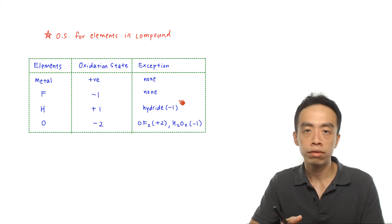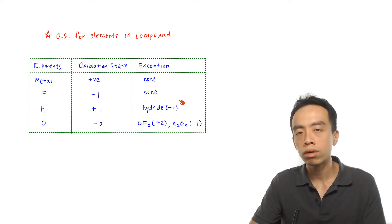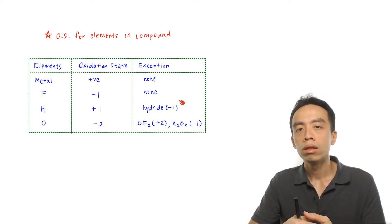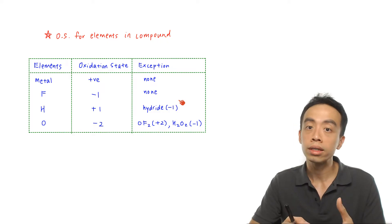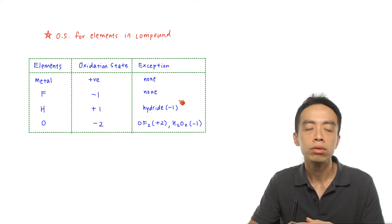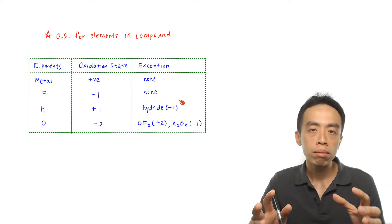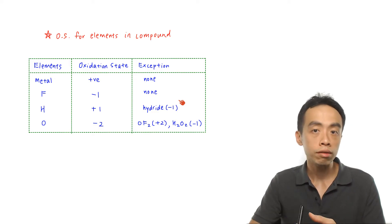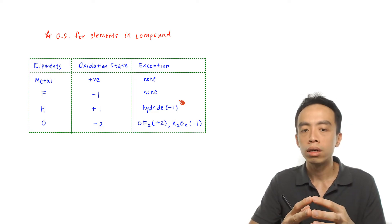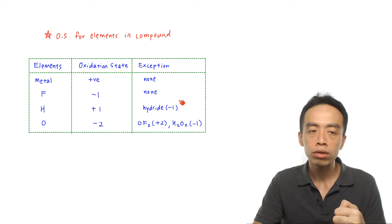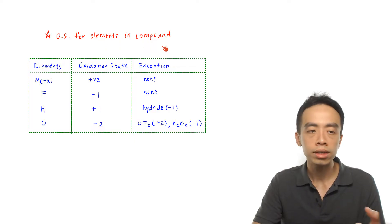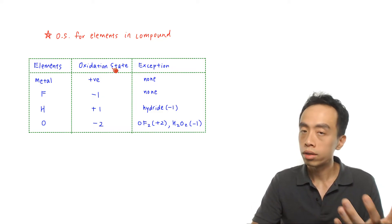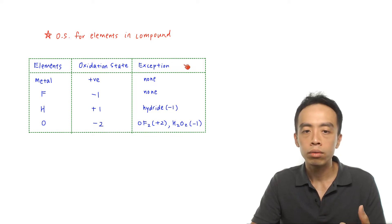Because electronegativity is a fixed property of elements, we can draw conclusions about the tendency for certain elements to possess certain oxidation states. We can remember some guidelines or tendencies to help us determine the oxidation state for elements inside a compound. There is a table of common elements, the oxidation state each tends to have, and any exceptions.